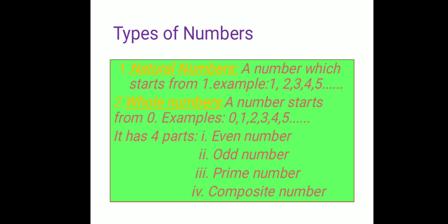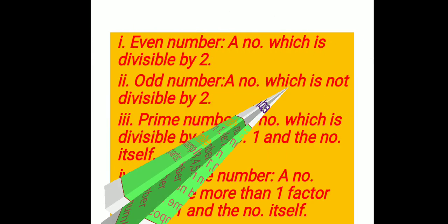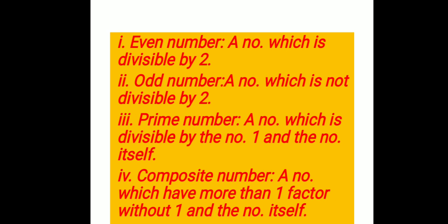The whole number has four parts: first, even number; second, odd number; third, prime number; and fourth, composite number. Even number is a number which is divisible by two — like zero, two, four, six, eight and so on.